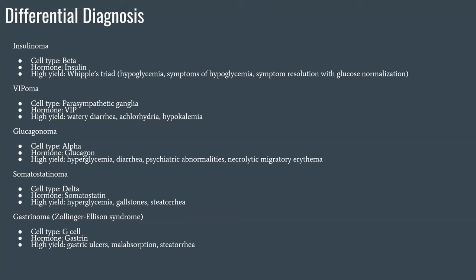Insulinomas are pretty straightforward. The cell is the beta cell, which normally produces insulin. The hormone it produces is insulin — this is essentially an overactivation in these tumors. The high-yield finding to be aware of is Whipple's triad, which is very self-explanatory. Really it's just remembering the name Whipple, because Whipple is involved in a lot of different things, but the triad itself is pretty self-explanatory.